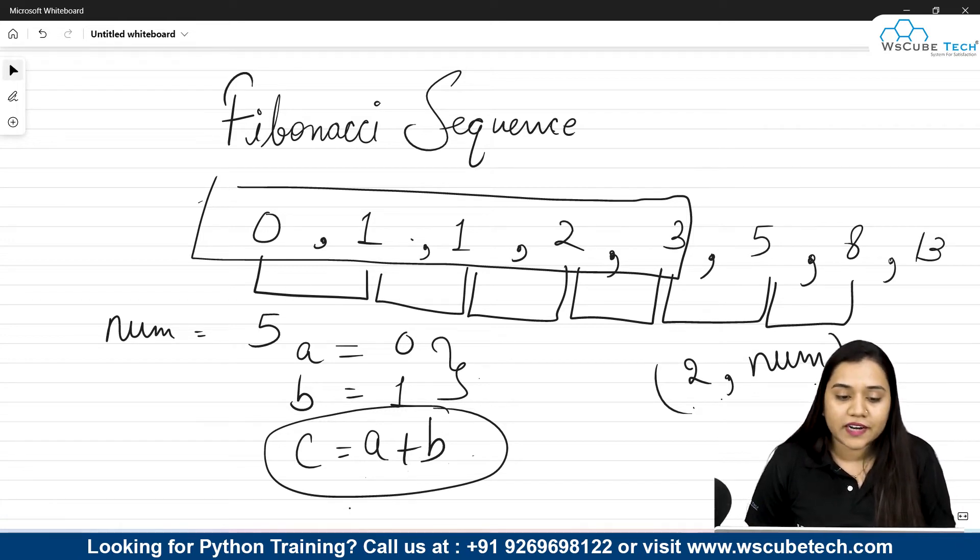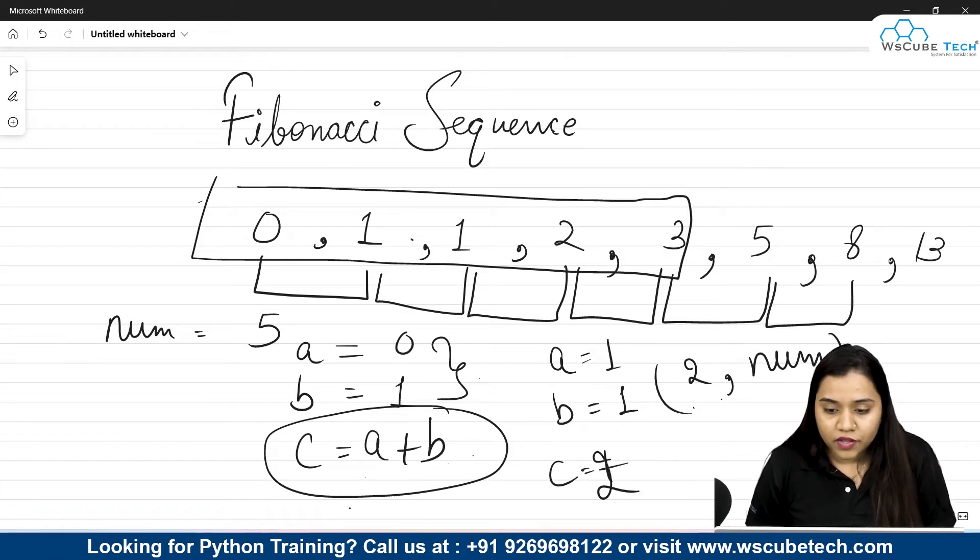Like this is for one iteration. What about the second iteration? In the second iteration A will become 1 and B will become again 1. So C will become 1 plus 1 that is our 2. In the next iteration A will become 1 again. That means A's value will become B's value that means it is 1. B's value will become C's value that is 2. And our C will become 3 over here.